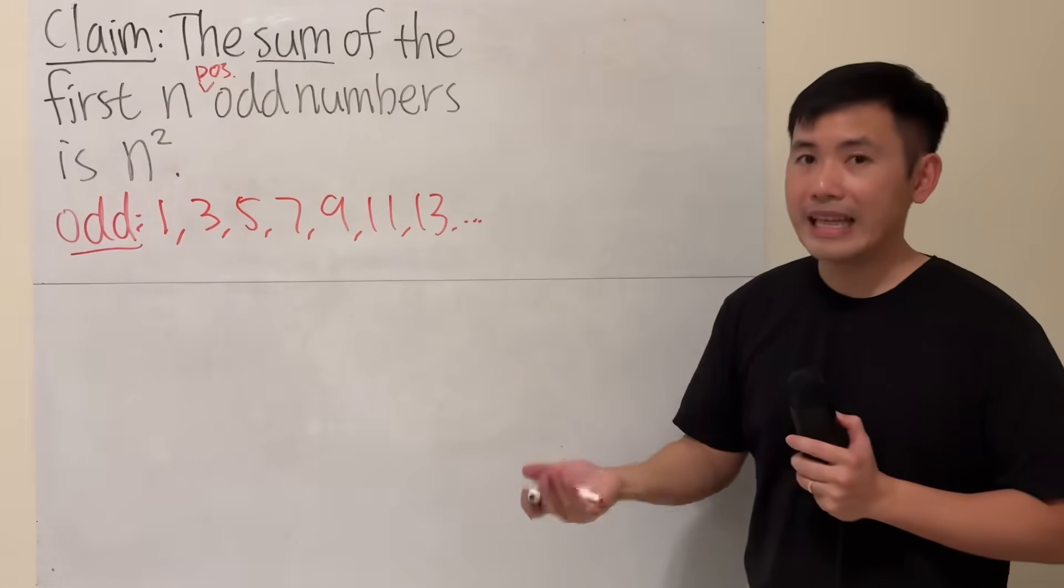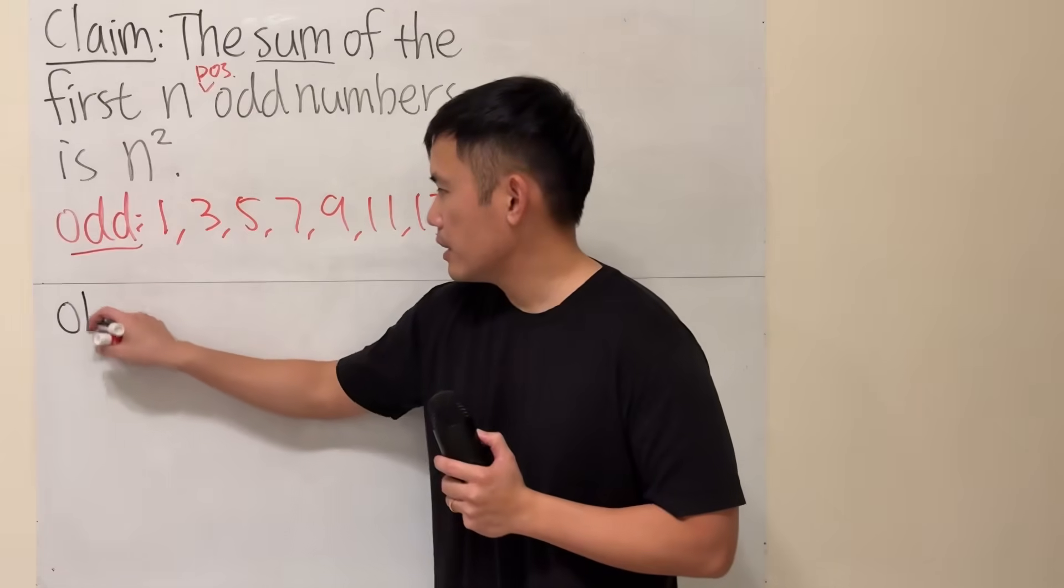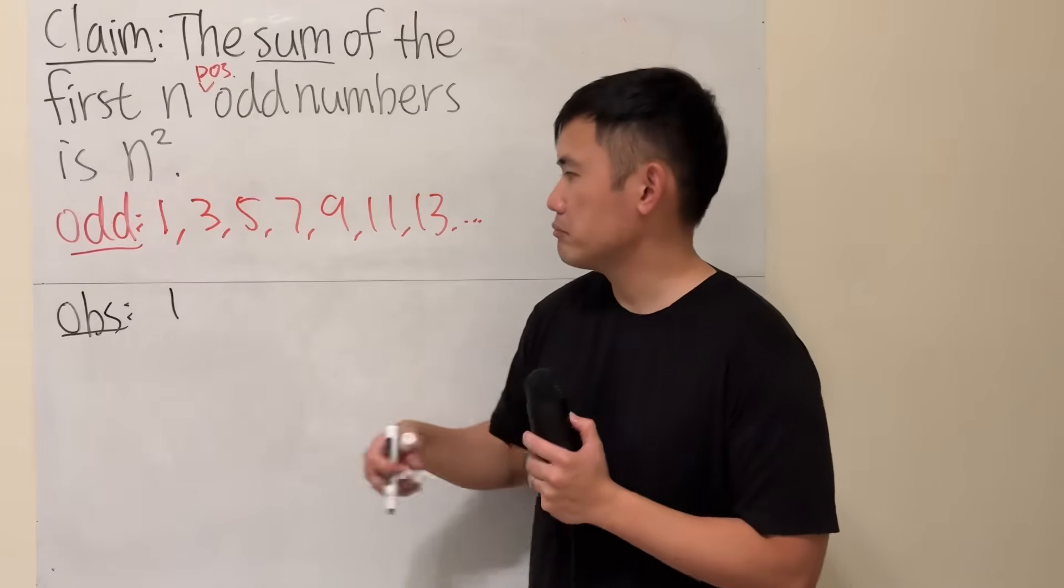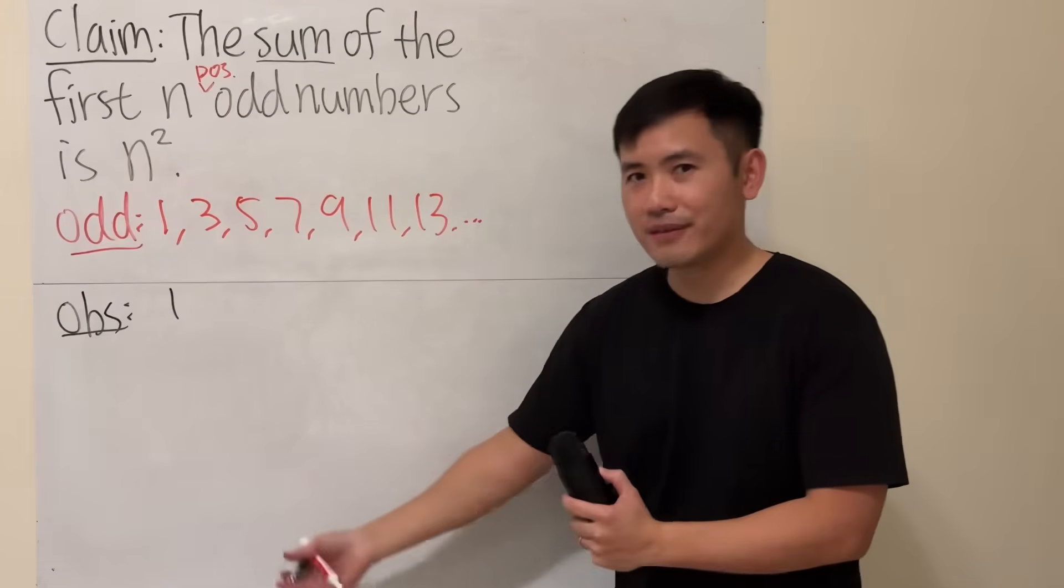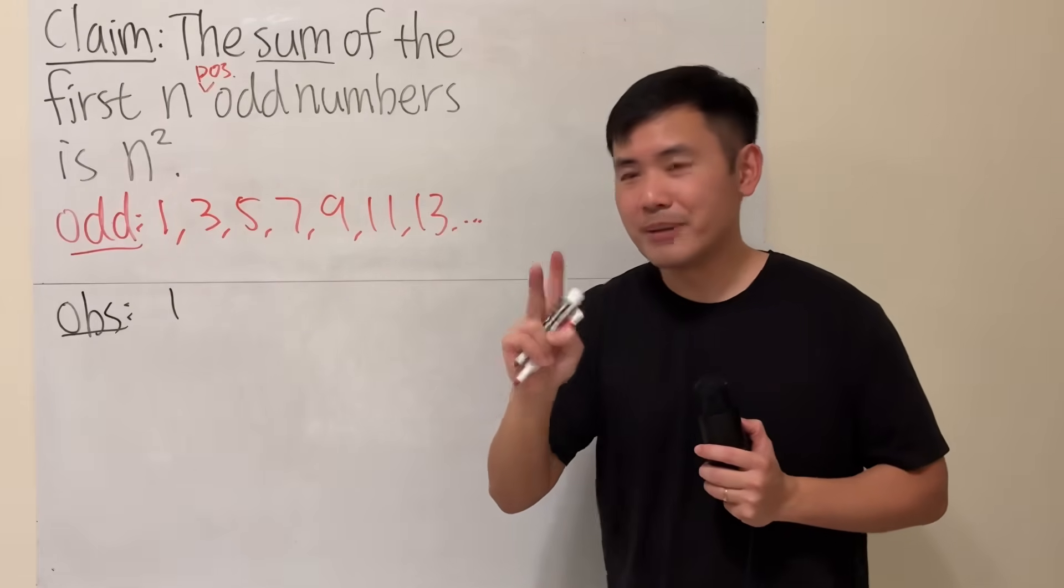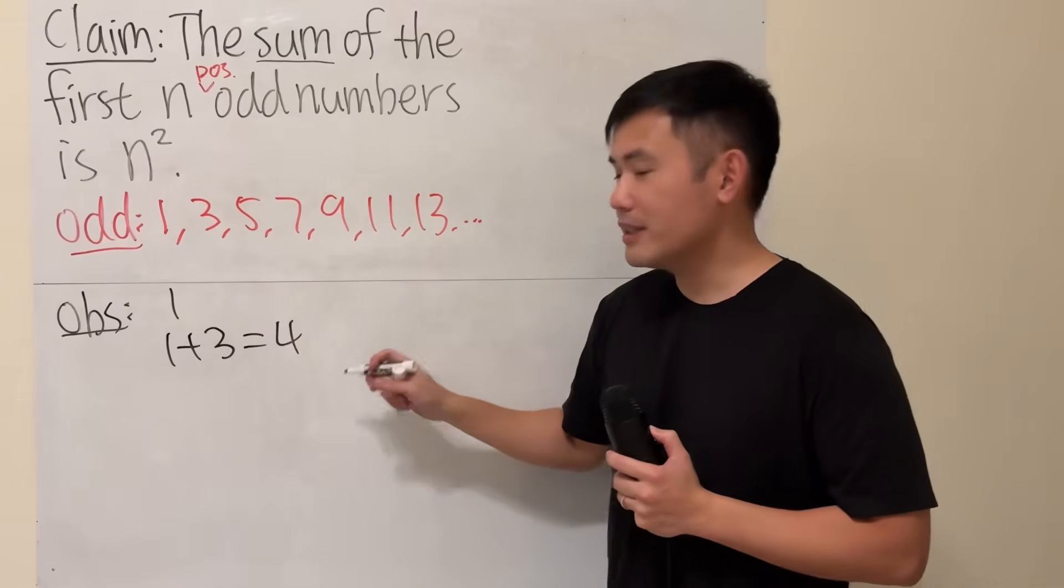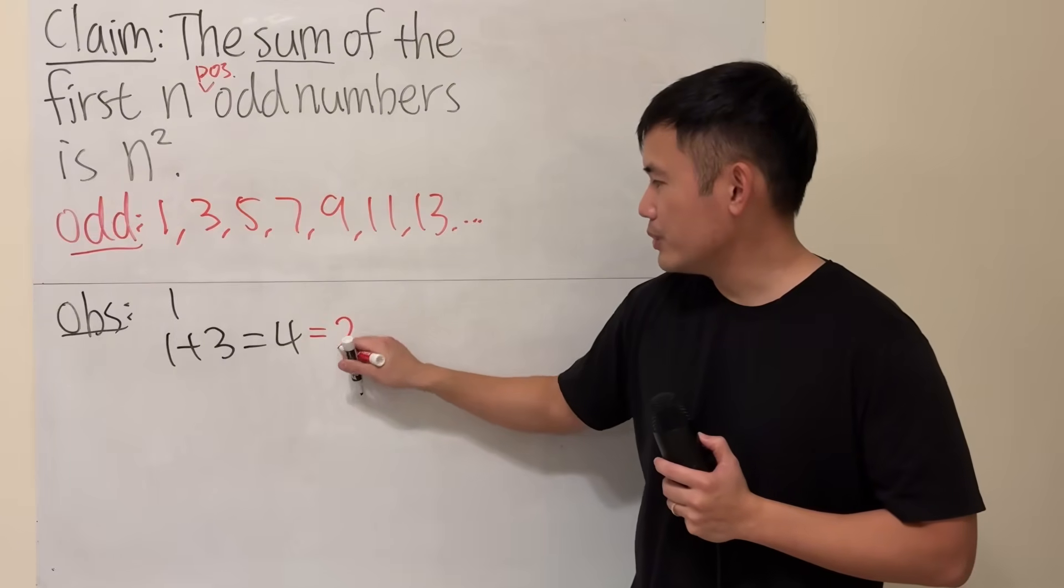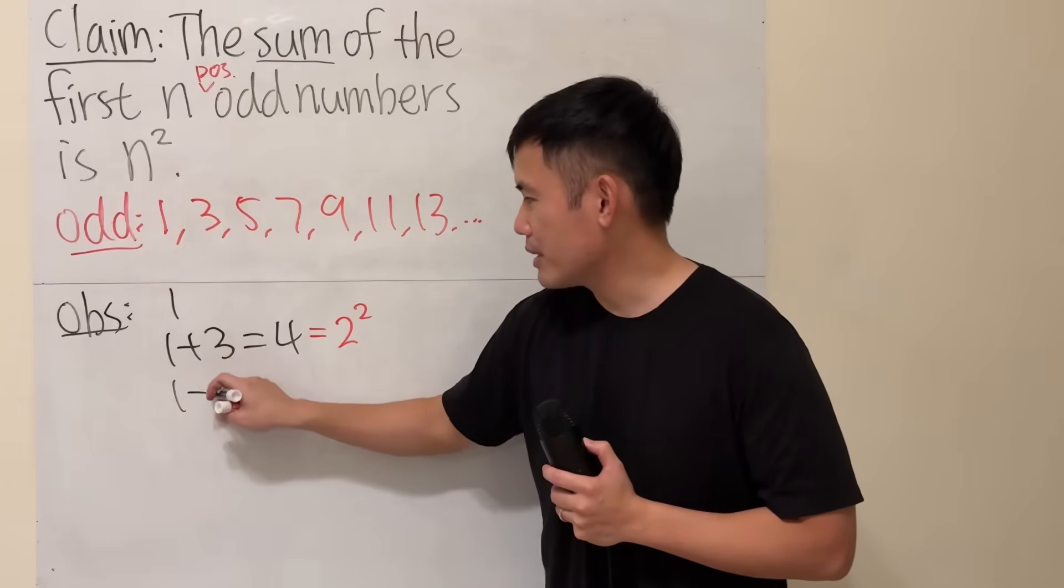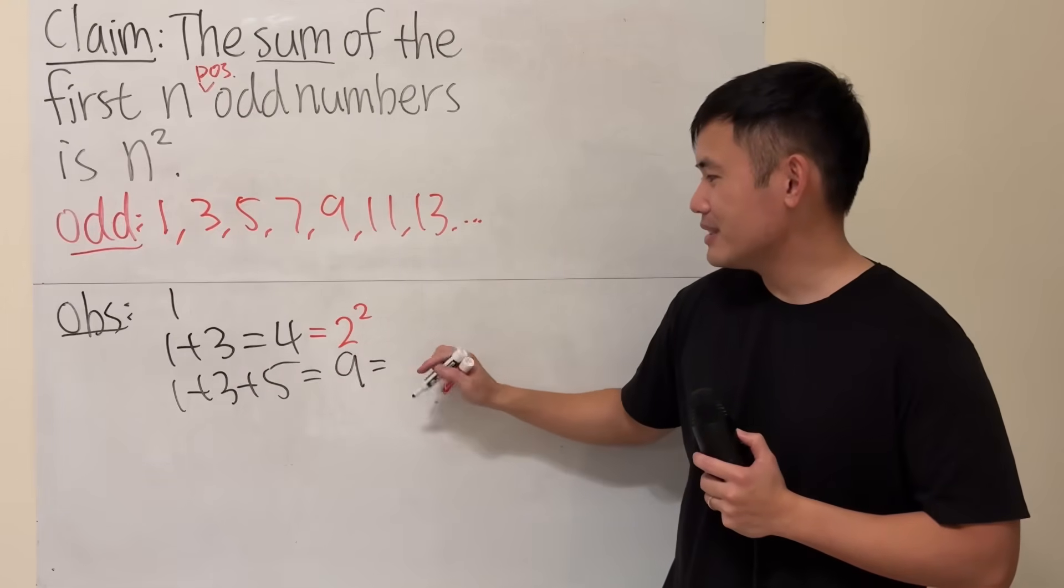Now the sum is, of course, we add them up. And how do we make the observation though? If I add the first odd number, it's just 1. Now I'm going to add the first two odd numbers. So this and that together, 1 plus 3, is 4. And guess what? This is the same as 2 squared. Now I'm going to add the first three odd numbers, which is 1 plus 3 plus 5. And that's 9, which is 3 squared.